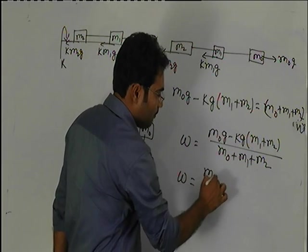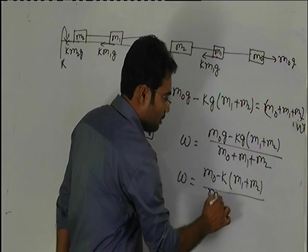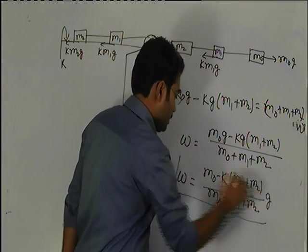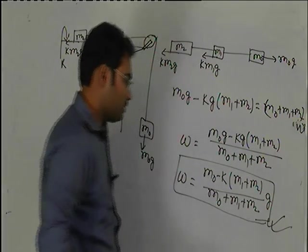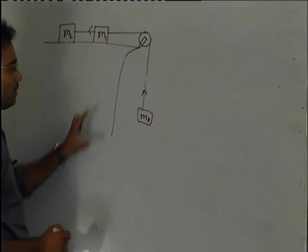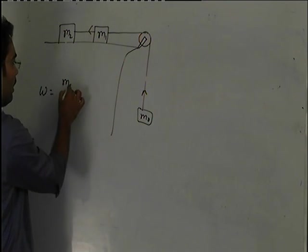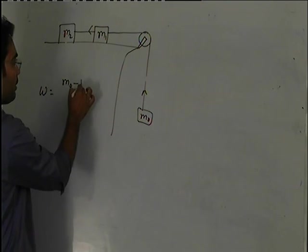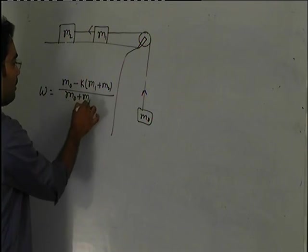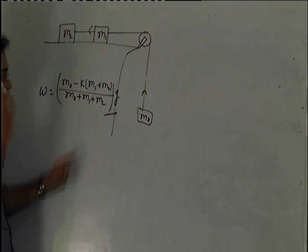M0 minus K into M1 plus M2 by M0 plus M1 plus M2 into G. This is the final result. We have already calculated acceleration.